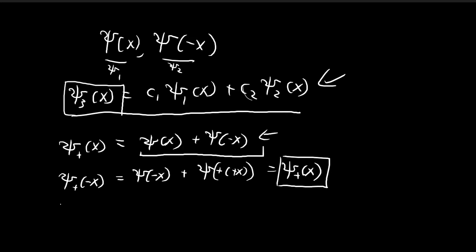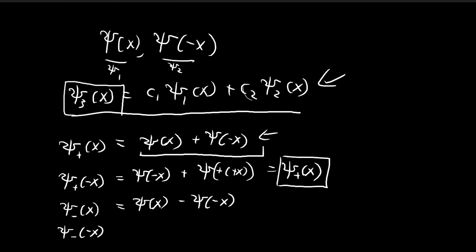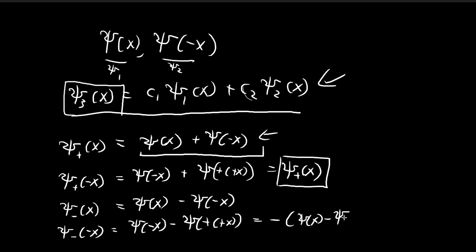We can do something similar for ξ₋(x), which we want to be an odd function. We define ξ₋(x) = ξ(x) - ξ(-x). We can check this is indeed an odd function: ξ₋(-x) = ξ(-x) - ξ(x) = -(ξ(x) - ξ(-x)) = -ξ₋(x).